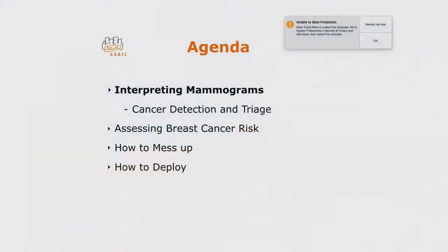For this section, I'm going to talk about some of our work in interpreting mammograms for cancer. Specifically, it's going to go into cancer detection and triaging mammograms. Next, we'll talk about our technical approach to breast cancer risk, and then finally close up with many different ways to mess up, how things can go wrong, and how to support clinical implementation.